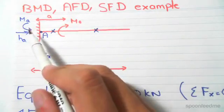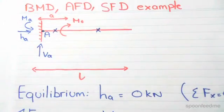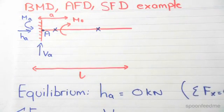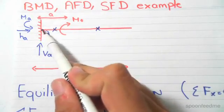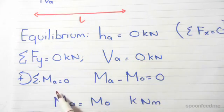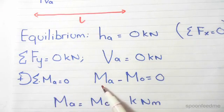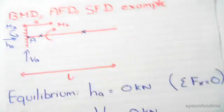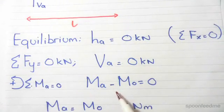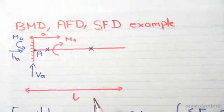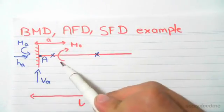Finally, we find our moment reaction Ma. We take the sum of moments about point A equal to zero. So we have Ma minus Mo equals zero. The reason we have minus Mo is because of the clockwise moment Mo applied at distance 'a' from the support.